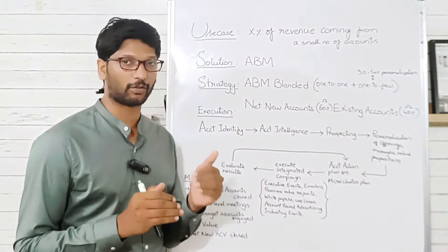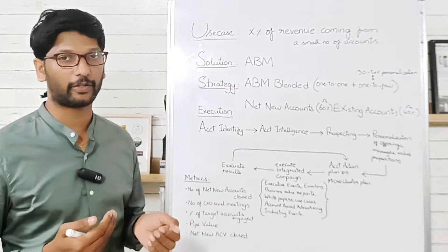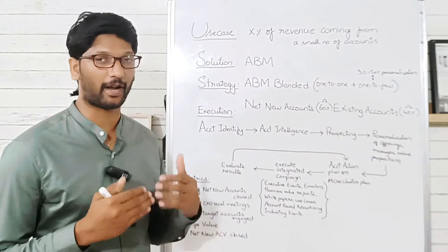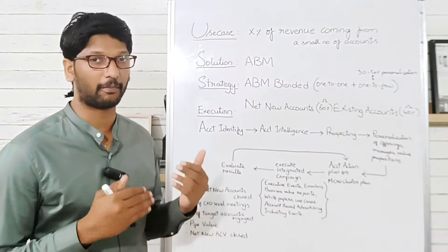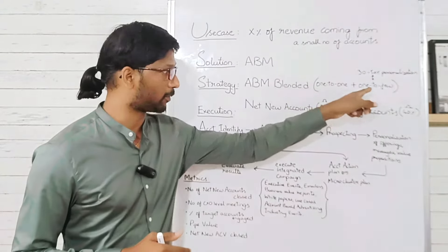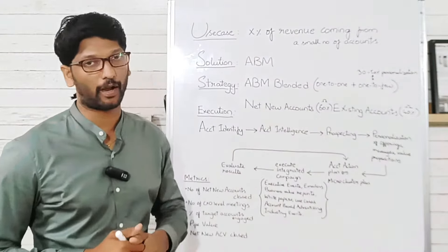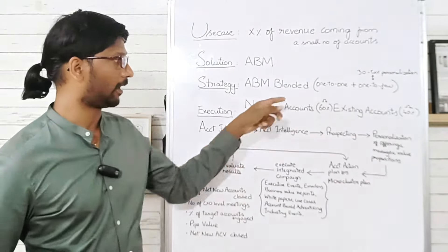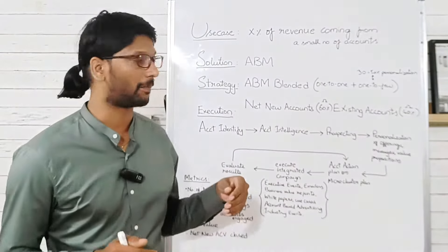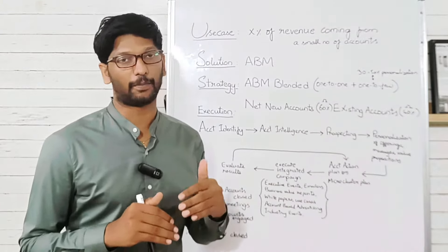In that case, you can use ABM as a solution. The kind of strategy you can use is ABM Blended, where you use both the ABM Strategic and ABM Light types. Strategic means a one-to-one approach and Light means a one-to-few approach. In the strategic approach, personalization would be at its maximum, and in the one-to-few approach, you'll have personalization of at least 30%.